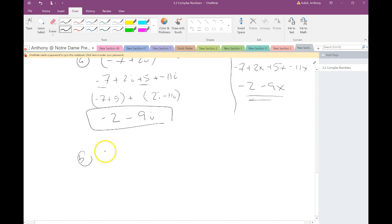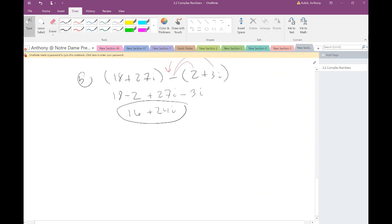The only thing we have to keep an eye on is the subtraction problem. Notice that we have a subtraction symbol in front of a parentheses. So what does that mean? It means that negative sign needs to be distributed throughout the second set of numbers. I'm going to have 18 minus 2 plus 27i minus 3i, or 16 plus 24i.